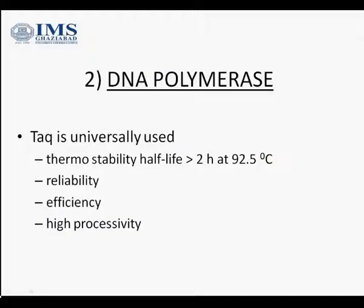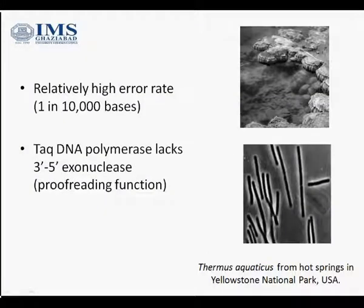The second component is DNA polymerase. Since we are doing PCR at a very high temperature, we need an enzyme which is stable at that temperature. We have the Taq enzyme, which is a thermostable enzyme and is very efficient — it has high processivity. It is isolated from Thermus aquaticus, a thermophile isolated from Yellowstone National Park. However, this enzyme has a high error rate of 1 in 10,000 base pairs and lacks 3' to 5' exonuclease activity, which is very important for proofreading function.